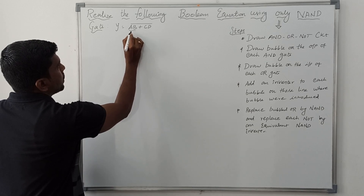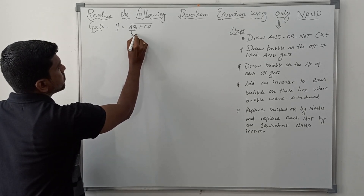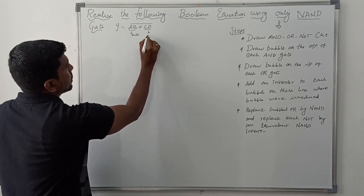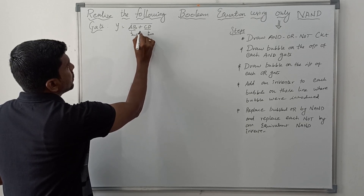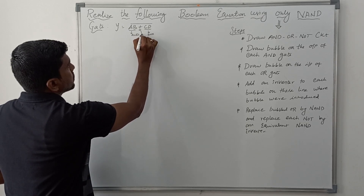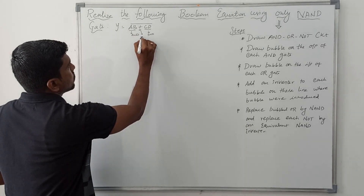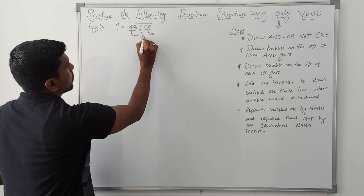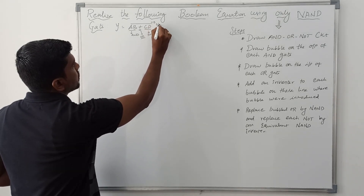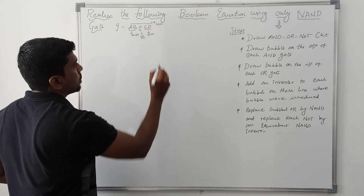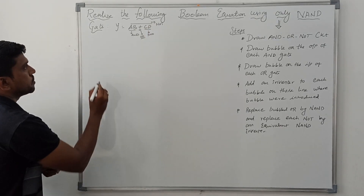For term AB, we need one AND gate. For term CD, we need one AND gate. Then we need one OR gate to combine the two product terms. For the complement, we need one NOT gate.